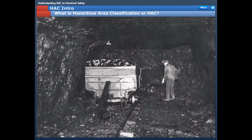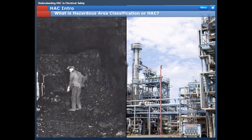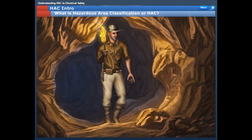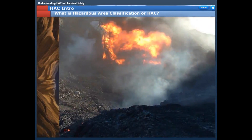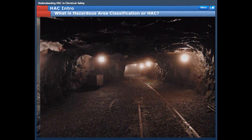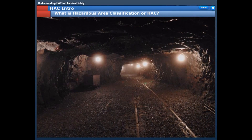Decades ago, there would be frequent accidents in coal mines and petrochemical industries due to the use of ordinary equipment like lamps. In coal mines, methane would cause fire damp, and the proximity of ordinary electrical equipment would trigger an explosion.